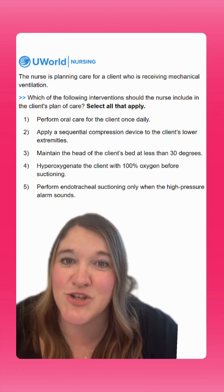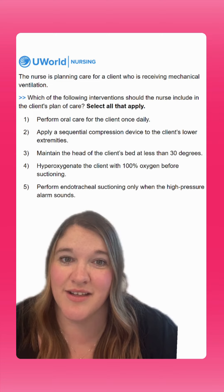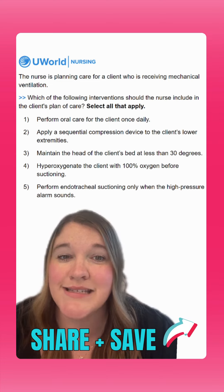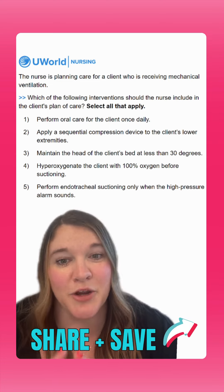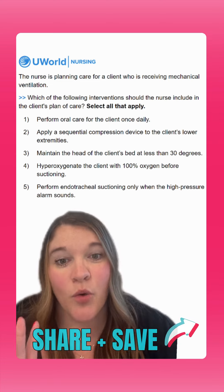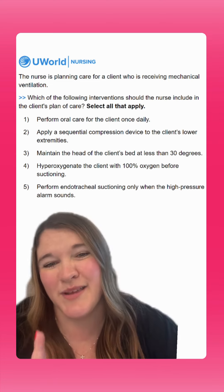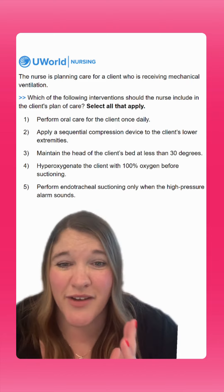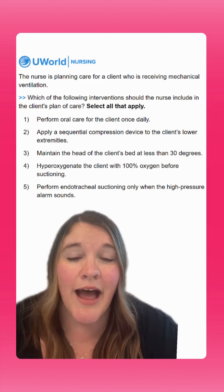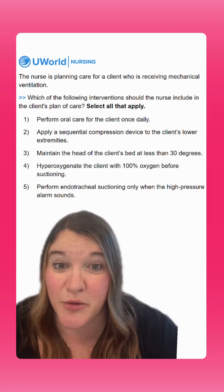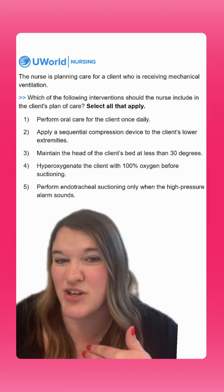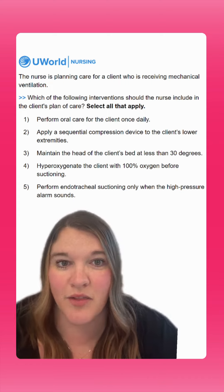Option three says to maintain the head of the client's bed at less than 30 degrees. This is going to be an incorrect option. We want our clients to be at least at a 45-degree angle to prevent ventilator-associated pneumonia, so those secretions don't go into the lungs.